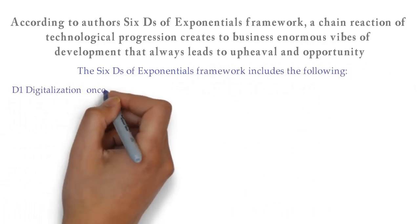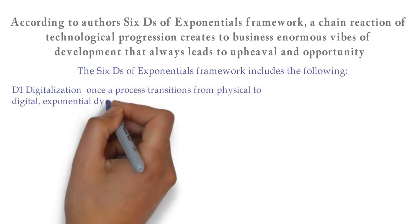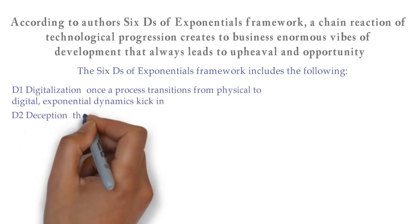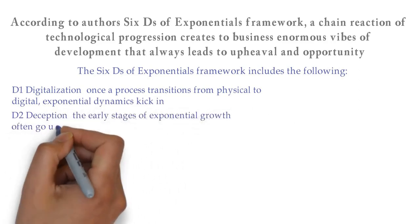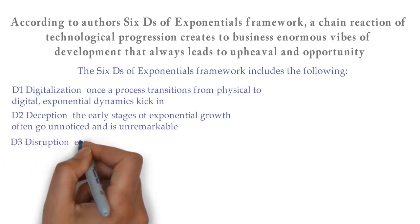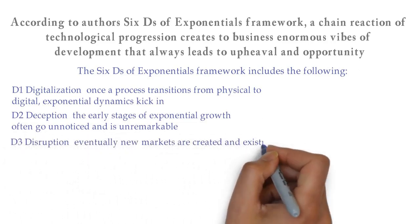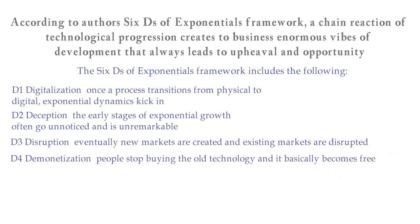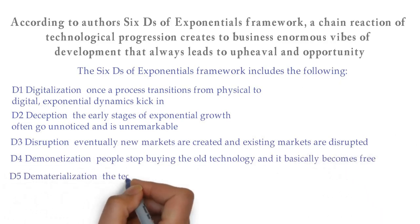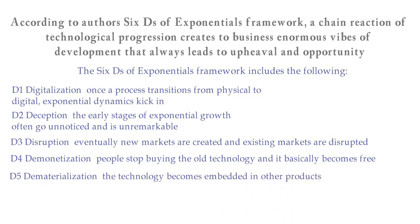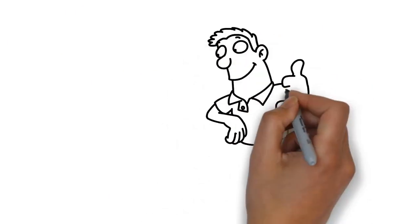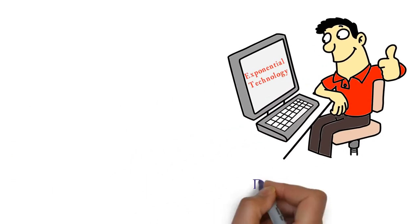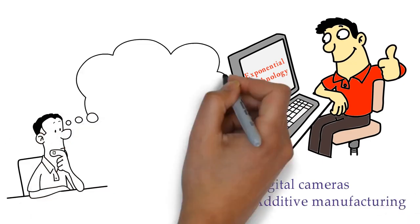The six Ds of Exponentials Framework includes the following: Digitalization - once a process transitions from physical to digital, exponential dynamics kick in. Deception - the early stages of exponential growth often go unnoticed and is unremarkable. Disruption - eventually new markets are created and existing markets are disrupted. Demonetization - people stop buying the old technology and it basically becomes free. Dematerialization - the technology becomes embedded in other products. Democratization - objects are turned into bits and hosted on a digital platform for everyone.